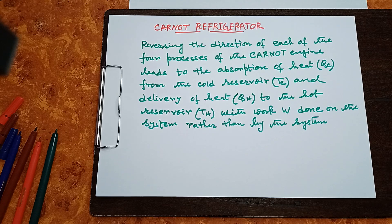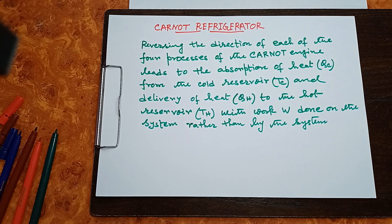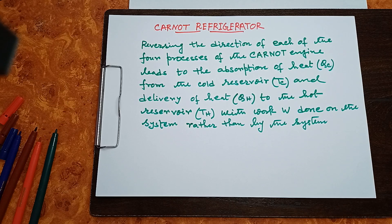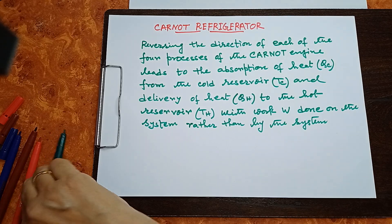Carnot Refrigerator. You have seen the Carnot cycle. If you reverse the cyclic process — that means if you start the compression first and supply work to the system (the working substance present in the heat engine) — heat will be taken from the cold bath or low temperature sink and delivered to the hot bath, the high temperature source. Then it is acting as a refrigerator.